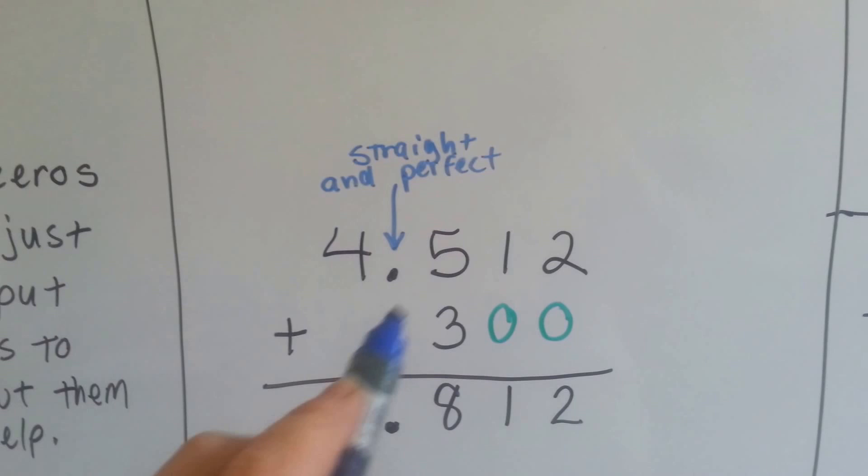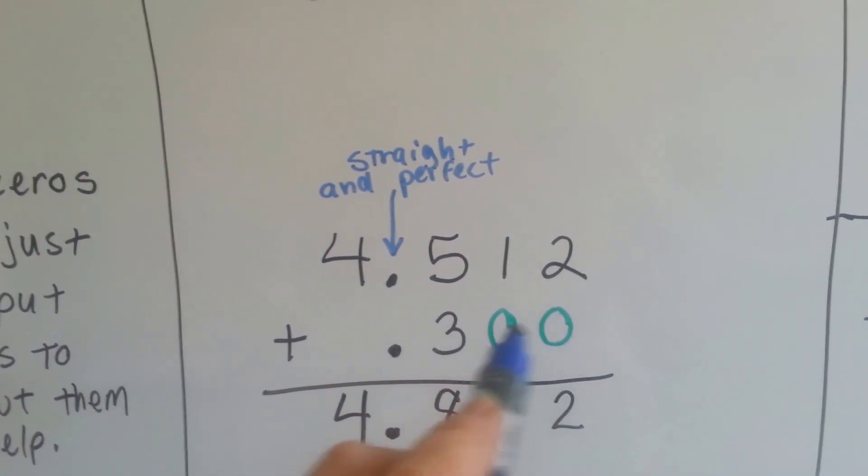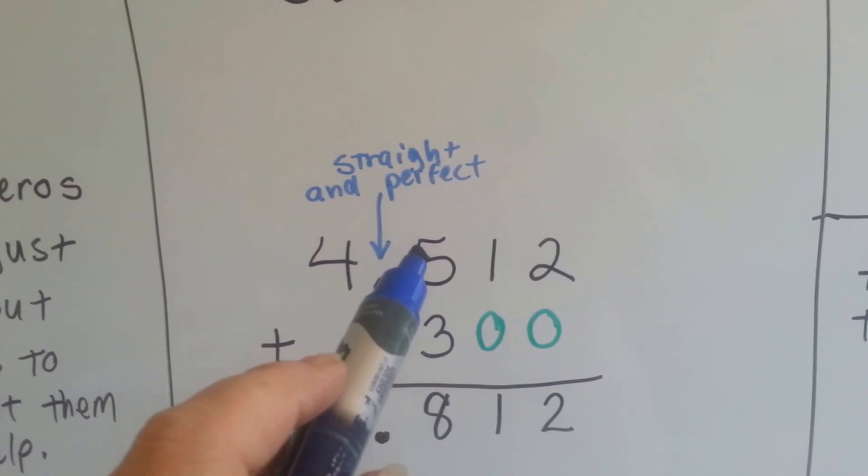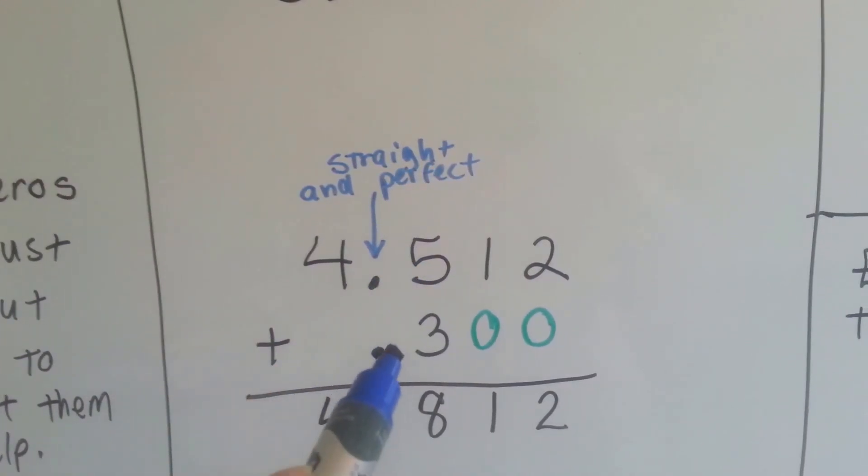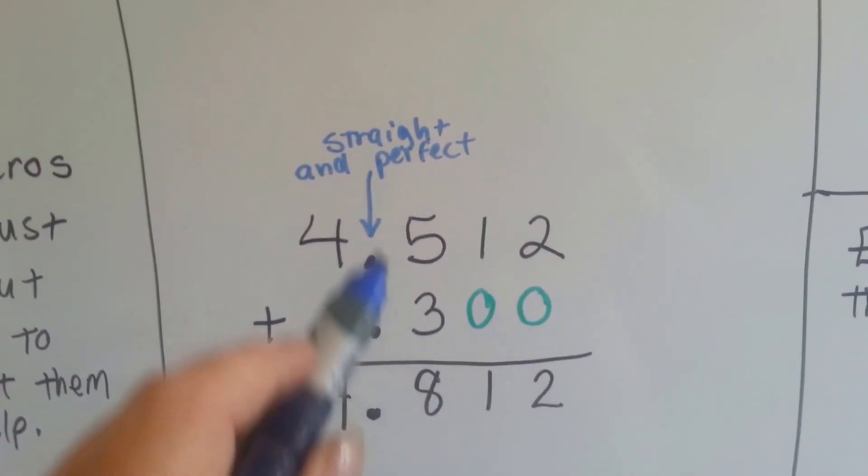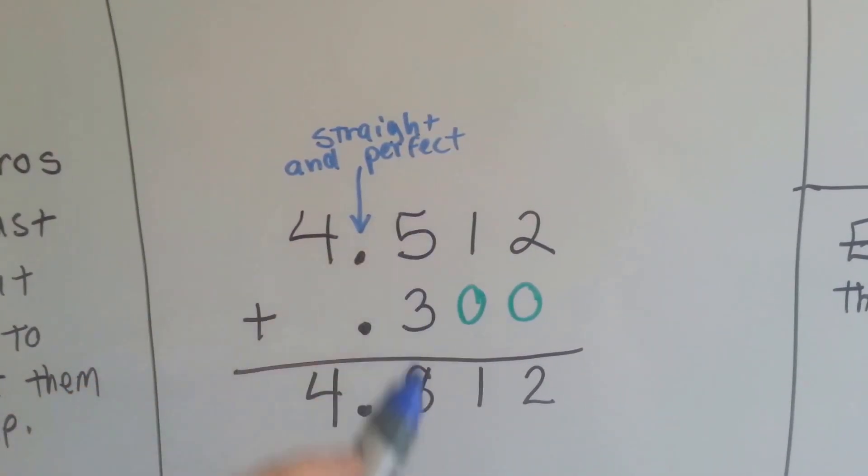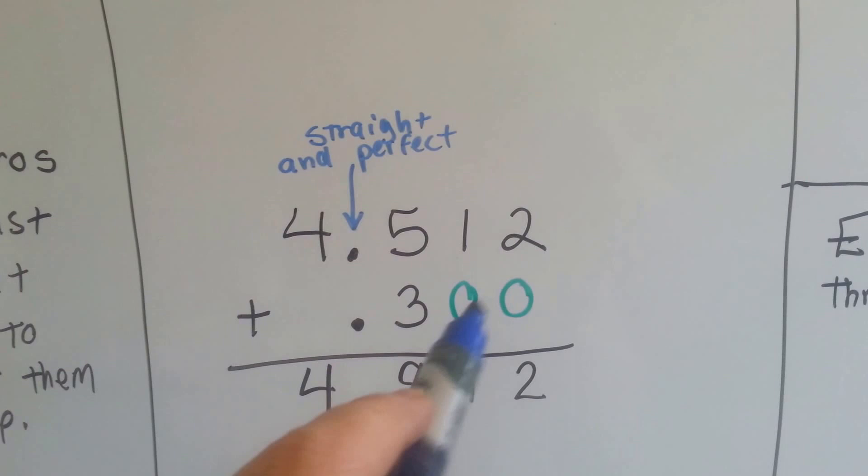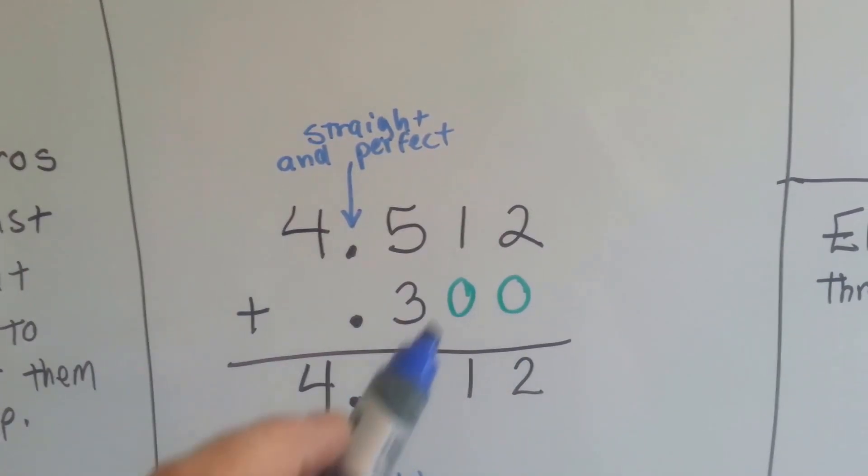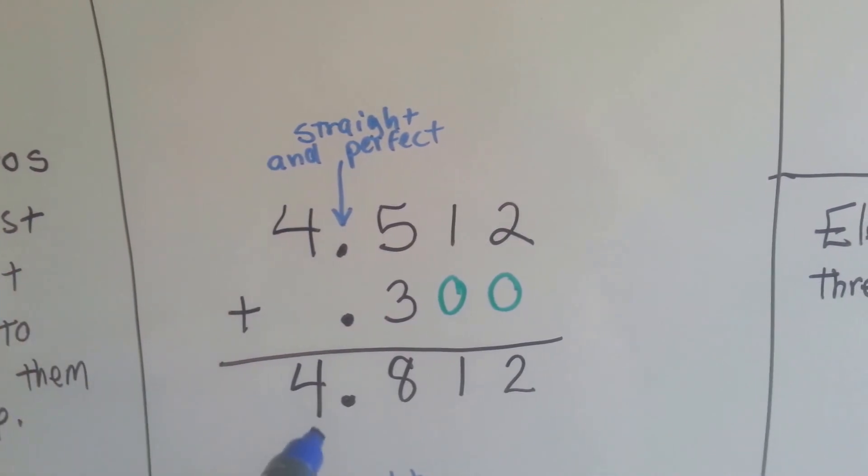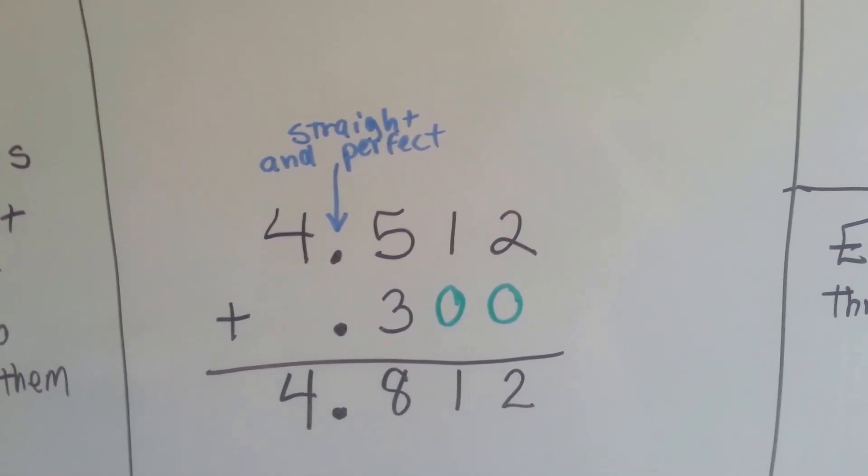If the bottom one is missing zeros, we can put those in. If we were adding 4 and 512 thousandths to 3 tenths, we line up our decimal points all straight and perfect so that the tenths are being added to tenths. We put in our helpful zeros, and we have 2, 1, 8. We drop the 4 and we have 4 and 812 thousandths.